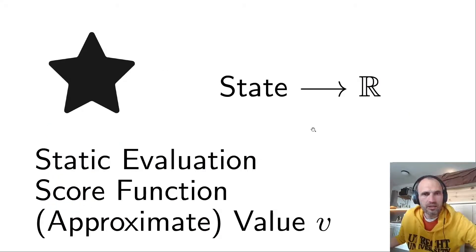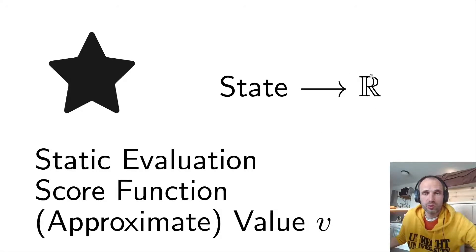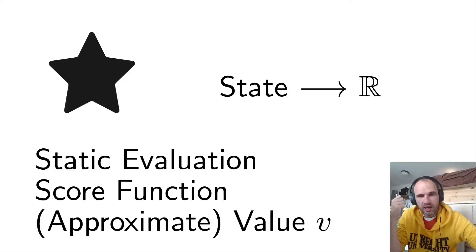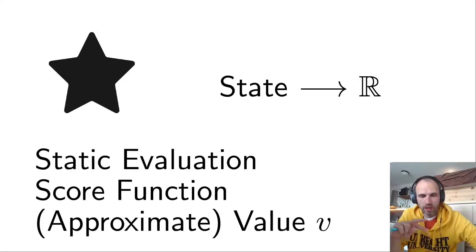The next thing you need to know is what a value function, score function, static evaluation, or approximate value — often denoted as v — is. It's a function which maps each state to the real numbers. The underlying idea is that states which are better for you get a higher value and states that are worse get a lower value. You may swap this if you alternate between your player and an opponent, so there's a maximizing player and a minimizing player.